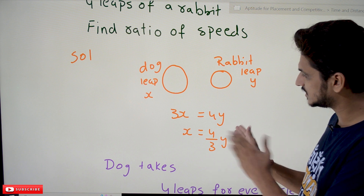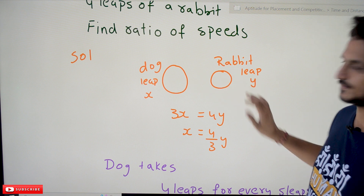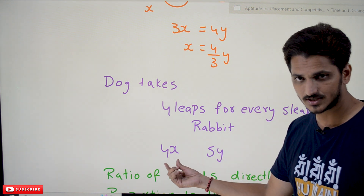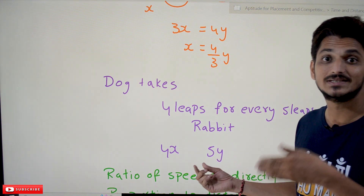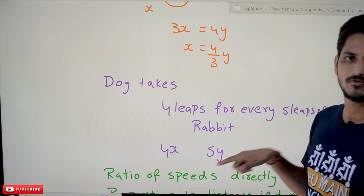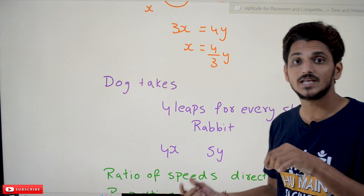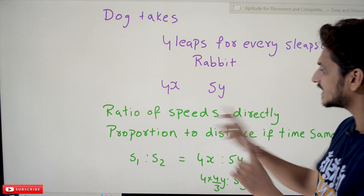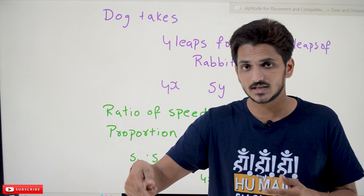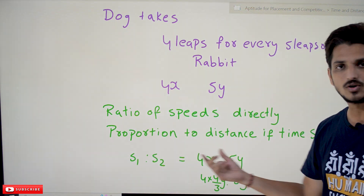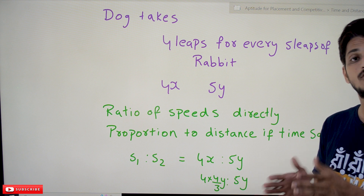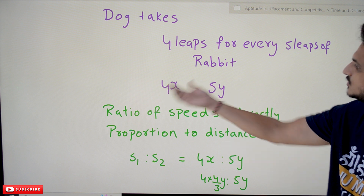From 3x = 4y, we get x = (4/3)y. So we now have the leap-distance ratio. The dog takes 4 leaps, covering distance 4x; the rabbit takes 5 leaps, covering distance 5y — and the time is the same. When time is same, speed is directly proportional to distance (speed = distance/time, so ratio of speeds = ratio of distances when time is same). This comes from the same formula discussed in the last class.